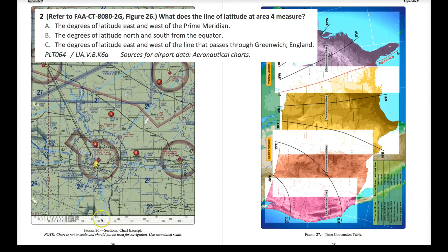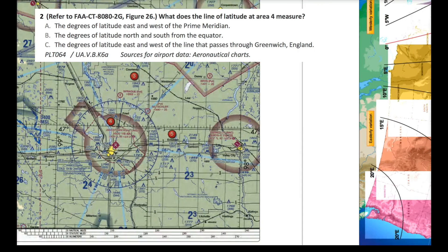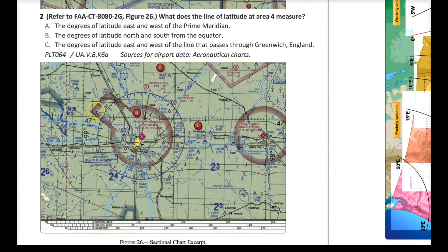For question number two, we refer to Figure 26 in the supplement. They ask: what does the line of latitude at area four measure? They've designated a few things around the chart for reference. Area number four specifically calls out a latitude line — remember, latitude lines lay flat, and these are the lines that move up from the equator. The line of latitude here would be 47 degrees.